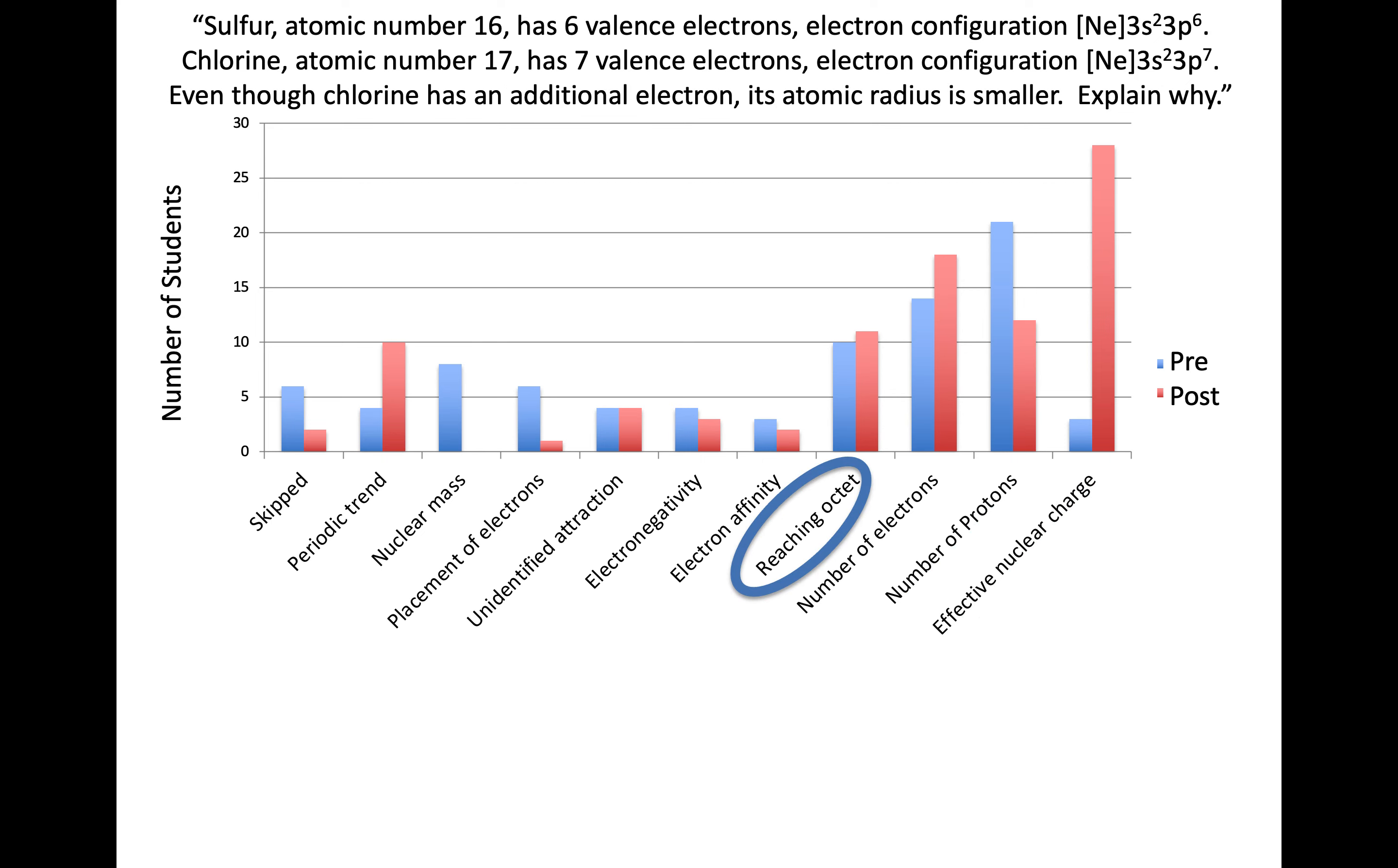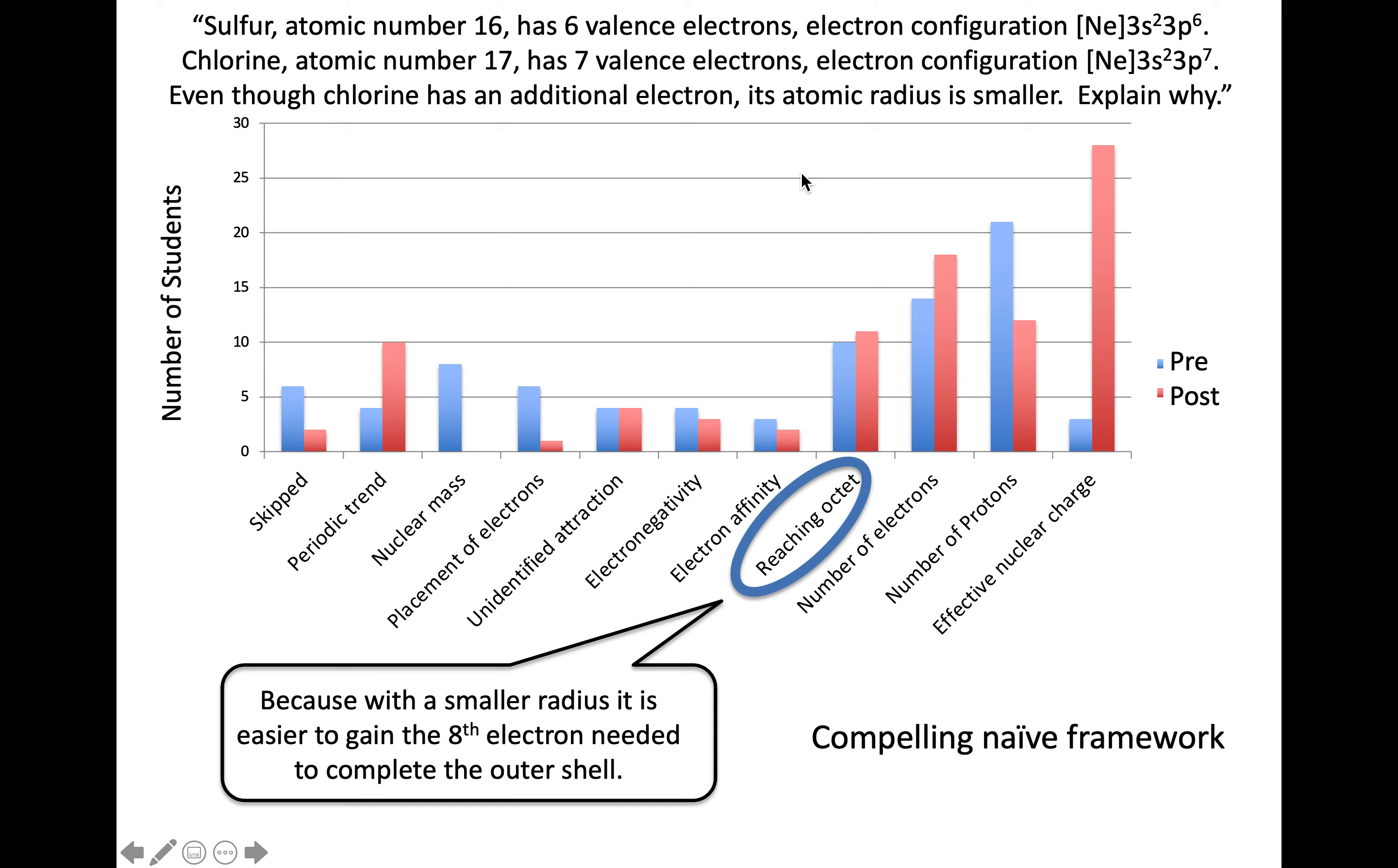What kind of competing explanations are there? Reaching an octet was persistent both before and after instruction. What do I mean by reaching an octet? Students reasoned that with a smaller radius, it's somehow easier to gain the eighth electron needed to complete the outer shell. This explanation tries to connect reaching an octet with why we see this difference in size. This naive framework, where everything is explained by octets, is very persistent throughout chapter 7.